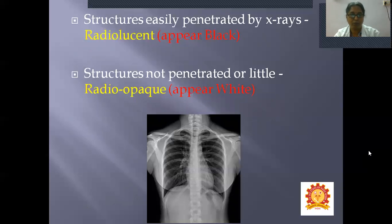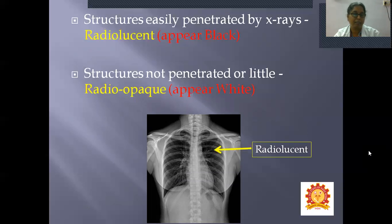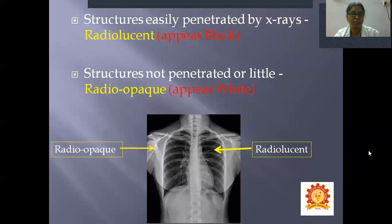Looking at a chest X-ray, you can see both radio-opaque and radiolucent structures. The lungs appear radiolucent, whereas bones appear radio-opaque. This is how white and black colors appear in X-rays. Hereafter, we should not use 'white' and 'black' — we should use the correct terminology: radiolucent and radio-opaque.